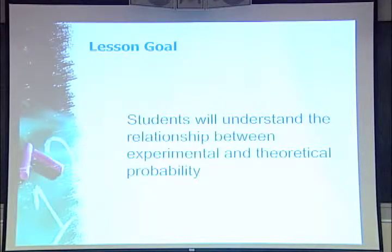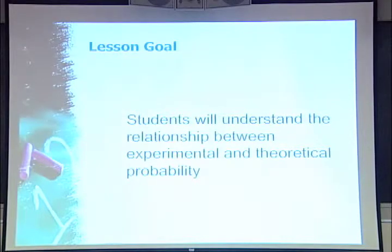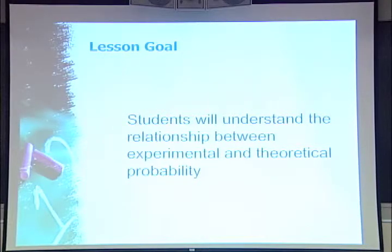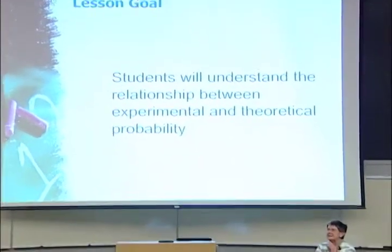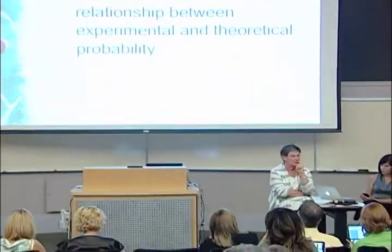Here is a goal: students will understand the relationship between experimental and theoretical probability — typically a middle school goal. Are the means embedded in that goal? No — no means. So that's an open-ended goal in which you can actually say that possibly all students could achieve it.